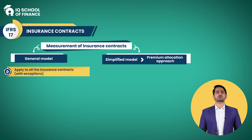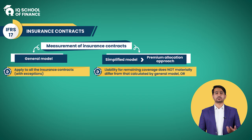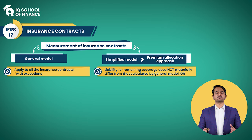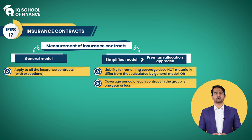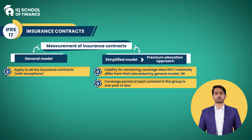You can only use the premium allocation approach for certain groups of insurance contracts that meet specific criteria. This includes scenarios where the liability for remaining coverage under the simplified approach does not significantly differ from what it would be under the general model — requiring a comparison test — or where the coverage period for all contracts within the group is one year or less. Opting for the simplified model is a choice, not mandatory, but it is often advantageous as it simplifies the accounting process compared to the general model.